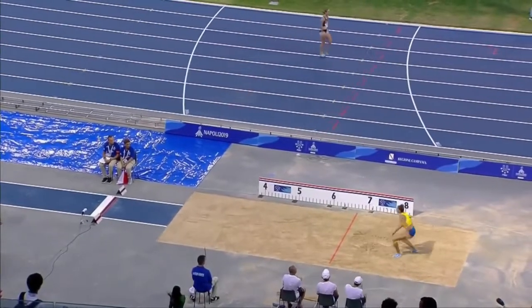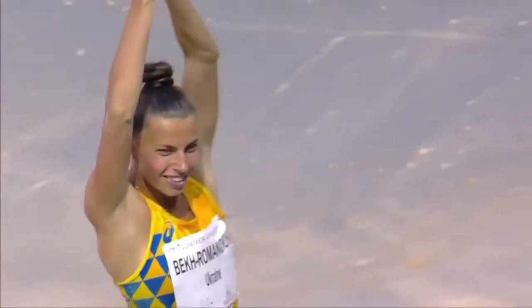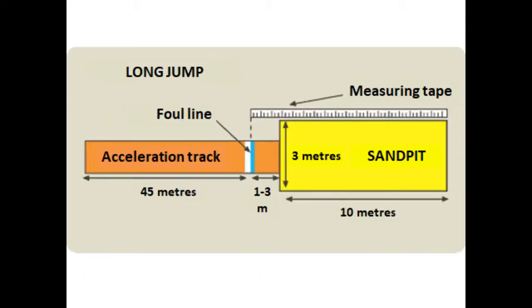The competition area contains all the following elements: the acceleration track, the foul line, the layer of plasticine and the sand pit. The acceleration track usually measures approximately 50 meters long and 1.22 meters wide. The jump line is 1 to 3 meters before the pit and is 20 centimeters wide. Following this, there is a 10-centimeter-wide plasticine board that allows visibility of a foul in the event of being passed or stepped on. The landing area or pit is a wet sand bed 3 meters wide and 10 meters long, located at least 1 meter from the takeoff line.